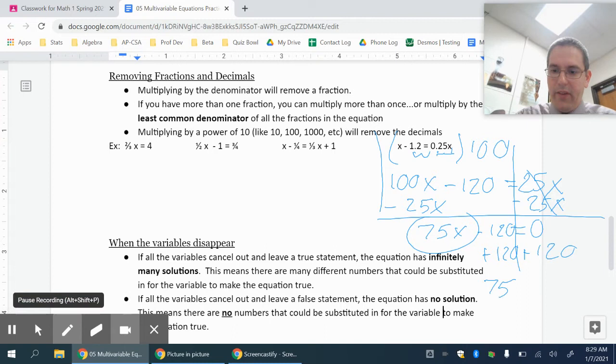I'm going to add 120 to both sides because I have to get this x term by itself. Once I've added 120 to both sides, I have 75x equals 120. And then for my last step, I divide off my coefficient.